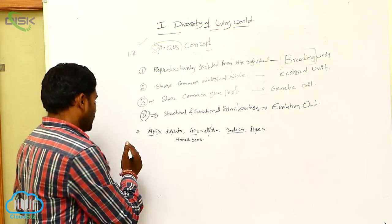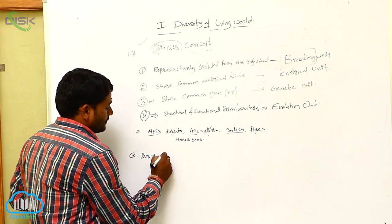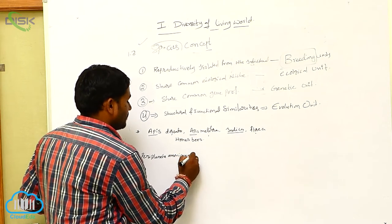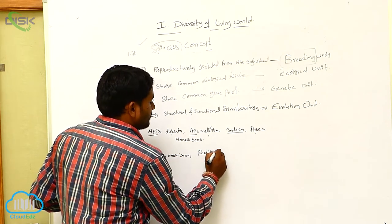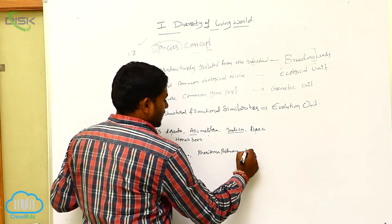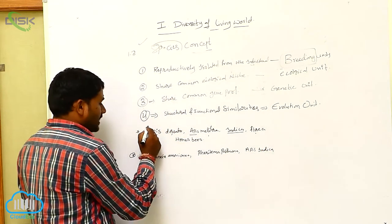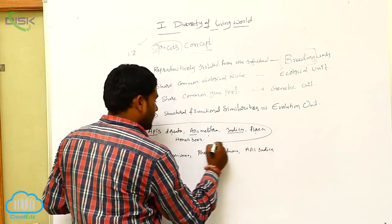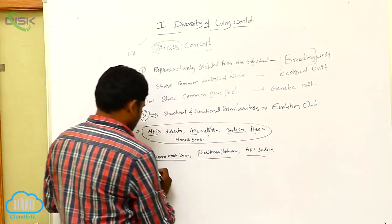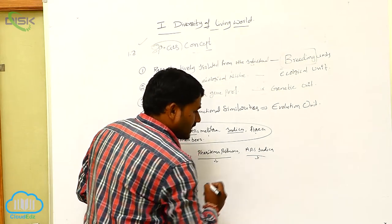Next, if you see Periplaneta americana and Pheretima posthuma — for example, taking Apis indica — these are different species belonging to the same genus, while Periplaneta, Pheretima posthuma, and Apis indica belong to different genera. Periplaneta is a cockroach, Pheretima posthuma is an earthworm, and Apis indica is a honeybee.